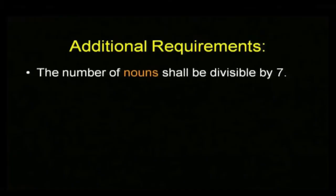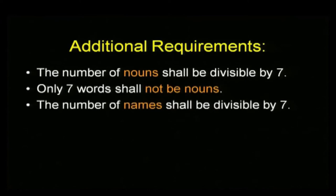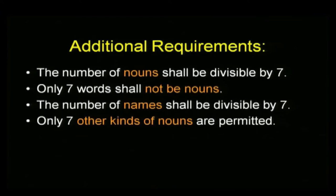How many are still playing? You realize every time I impose another sevenfold rule, you've got six chances of losing and one of winning just by randomness. The number of nouns should be divisible by seven. Only seven words won't be nouns. And the number of names should be divisible by seven. Only seven other kinds of nouns are permitted.